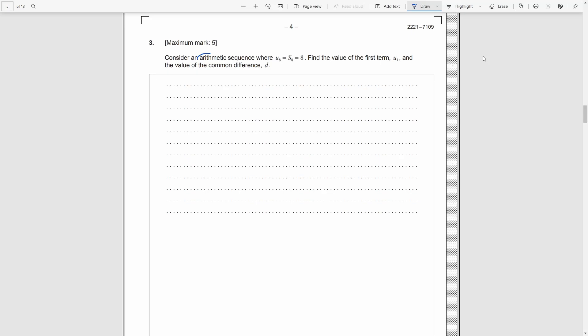Question 3. Here is an arithmetic sequence where the eighth term and the sum of the first eight terms are also 8. We need to find the first term and the common difference. Obviously, we need to set some equations by this. By the general formula of AS, u_n is u_1 plus n minus 1 times the common difference. Then we can substitute 8 for u_n and n. After simplifying it, we get one equation.